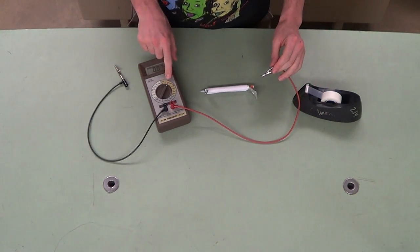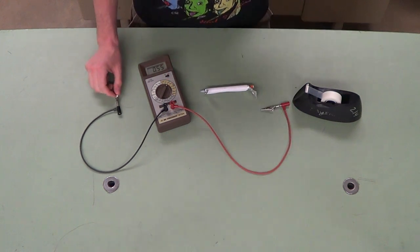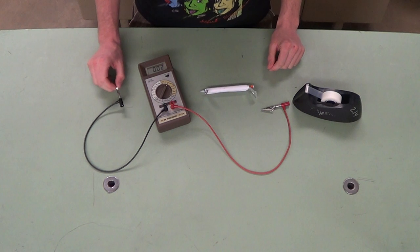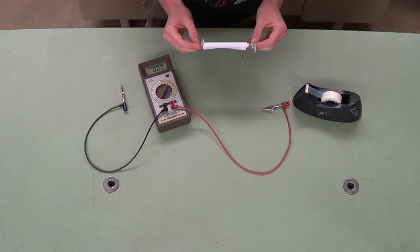It's selected right now to 20 nanofarads, which is a good range to look for. We can also look at the resistance of our capacitor by hooking up an ohmmeter to these two leads.